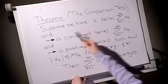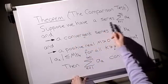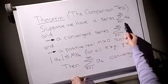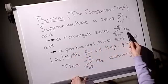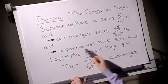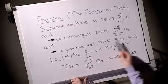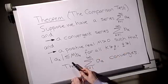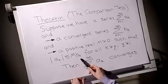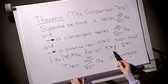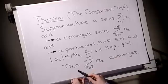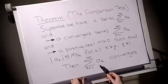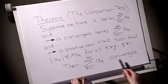So here's our theorem, the comparison test. Suppose we have a series, the sum from 1 to infinity of ak, and we've got two other things. One is a convergent series bk, and one is a positive real number m, such that the following property holds. The modulus of each of the ak terms is less than or equal to m multiplied by the bk terms, which has to be true for all k beyond some point q. The conclusion of the theorem is that the sum ak, the infinite series, converges.